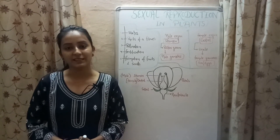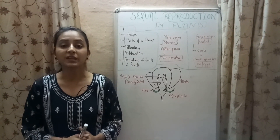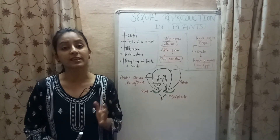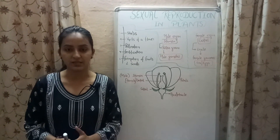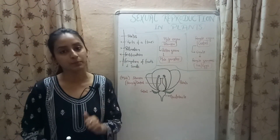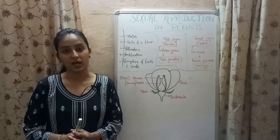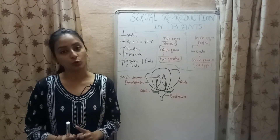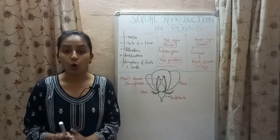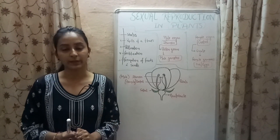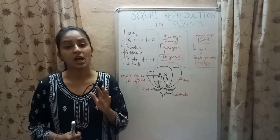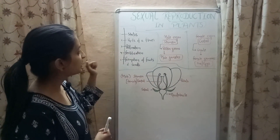Welcome to Biology at Ace. In my previous video I gave a brief introduction about the process of reproduction and we also discussed asexual reproduction in plants and animals. Now in this video we'll be discussing sexual reproduction in plants. There are two types of plants: flowering plants and non-flowering plants. Sexual reproduction occurs in flowering plants, whereas in non-flowering plants asexual reproduction takes place by various methods like spore formation.